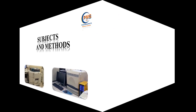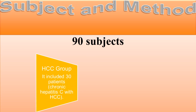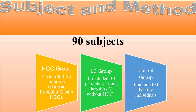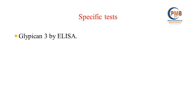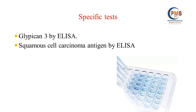Subjects and methods: Our study was done on 90 subjects divided into three groups. The HCC group included 30 patients with chronic hepatitis C with HCC. The liver cirrhosis group included 30 patients with chronic hepatitis C without HCC. The control group included 30 patients. Specific tests performed included Glypican-3 and squamous cell carcinoma antigen by ELISA.